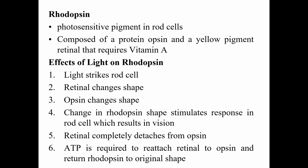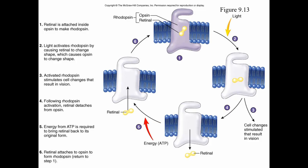Rhodopsin is a photosensitive pigment in rod cells, composed of protein opsin and a yellow pigment retinol containing vitamin A. When light strikes the rod cell, retinol changes its shape, causing opsin to change shape as well. This change in rhodopsin stimulates a response in the rod cell, resulting in vision. Retinol completely detaches from opsin, and ATP is required to reattach retinol to opsin, returning rhodopsin to its original shape in a regenerative cycle.